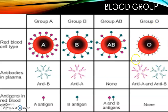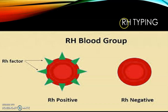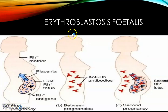For Rh typing, a new antigen called antigen D was found in rhesus monkeys and similarly in humans. Individuals having antigen D are termed Rh positive, and those without antigen D are termed Rh negative. The Rh factor is essentially antigen D — if present, the person is Rh positive; if absent, they are Rh negative.